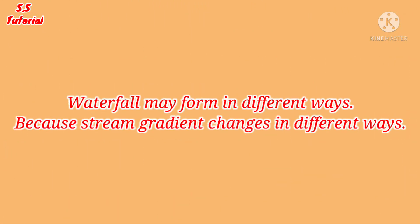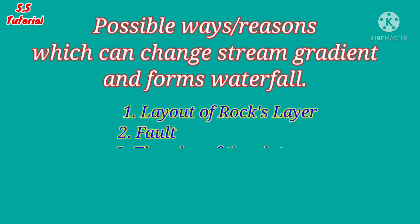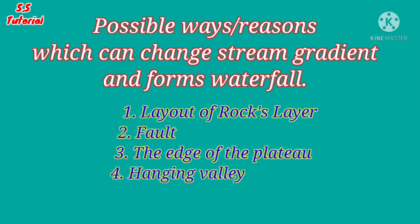Waterfall may form in a variety of ways because it is possible to change the slope of the river in different ways. Here are some possible ways which can change the slope of the river and may form a waterfall: layout of rock layers, fault, the edge of a plateau, hanging valley, river rejuvenation, and so on. Let's know about these in detail.